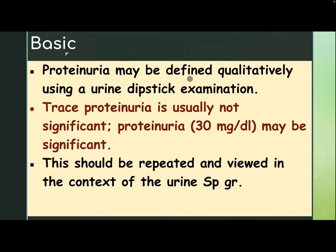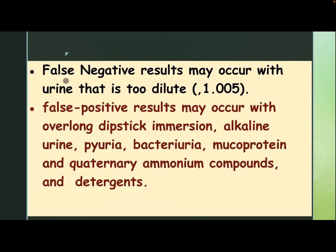Proteinuria may be defined qualitatively using a urine dipstick examination. Trace proteinuria is usually not significant. Proteinuria of 30 mg per deciliter may be significant. This should be repeated and viewed in the context of the urine specific gravity. False negative results may occur with urine that is too dilute, specific gravity 1.005.